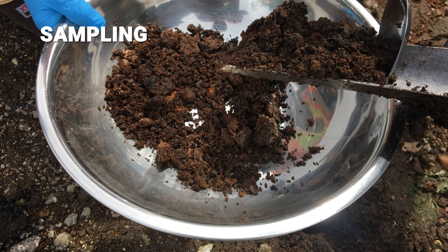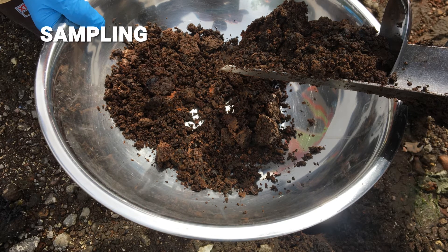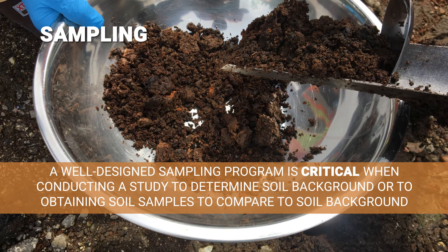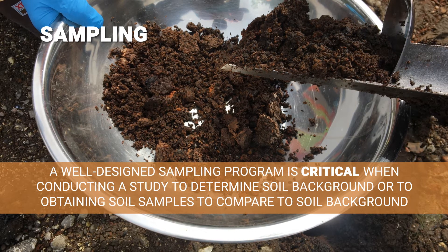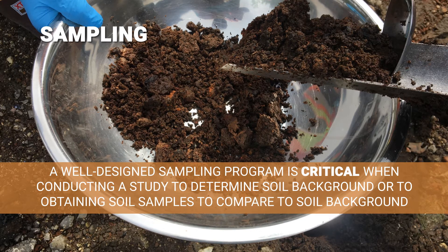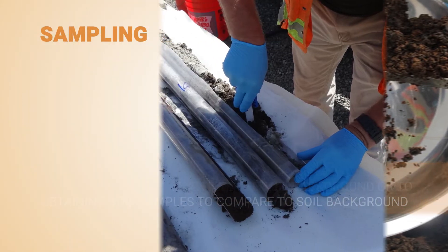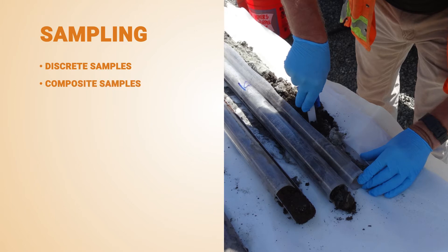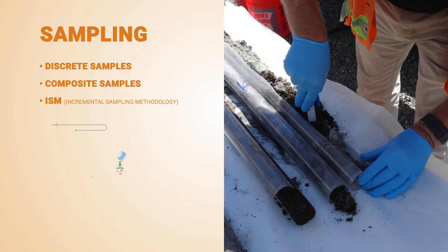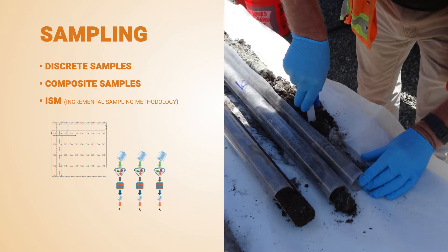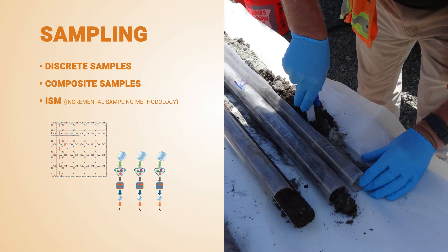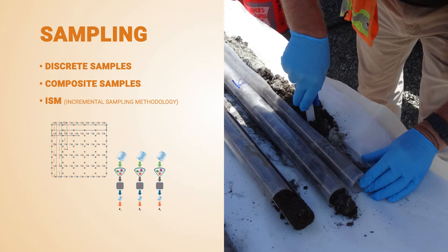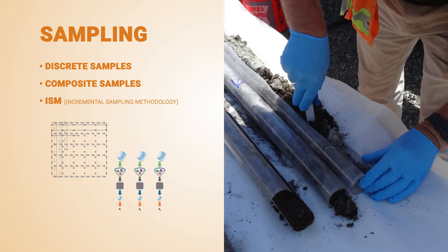A well-designed sampling program is critical when conducting a study to determine soil background or to obtain soil samples to compare to soil background. Sampling for developing representative background comparison concentrations can be accomplished by collecting discrete samples, composite samples, or using an incremental sampling methodology referred to as ISM. Each method has its advantages and disadvantages. It is important that soil background samples be collected using the same or similar sampling methods as the samples from the site being evaluated to ensure comparability of the datasets.